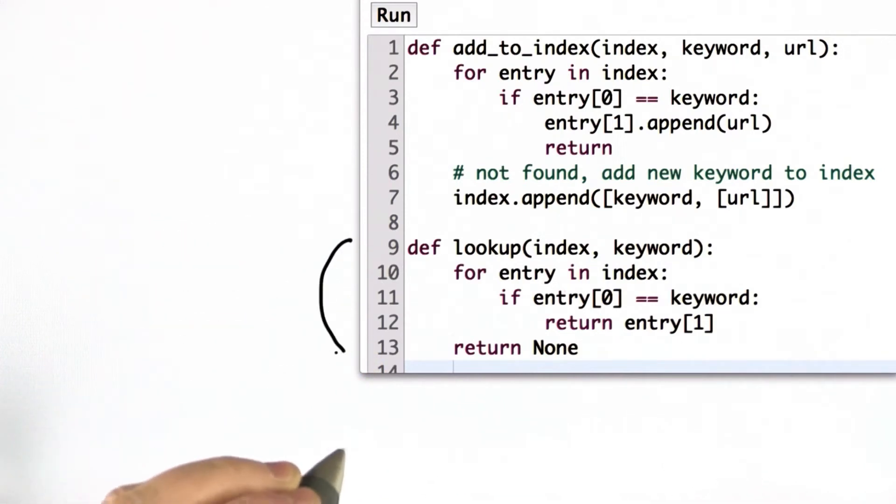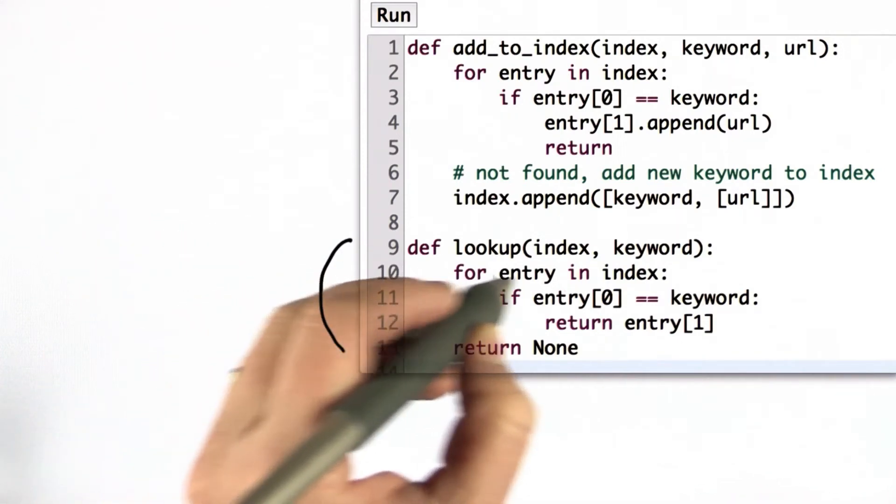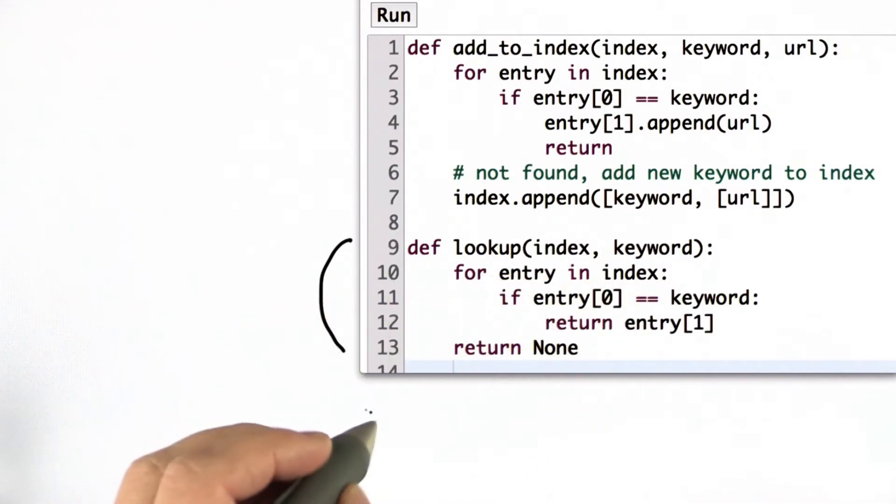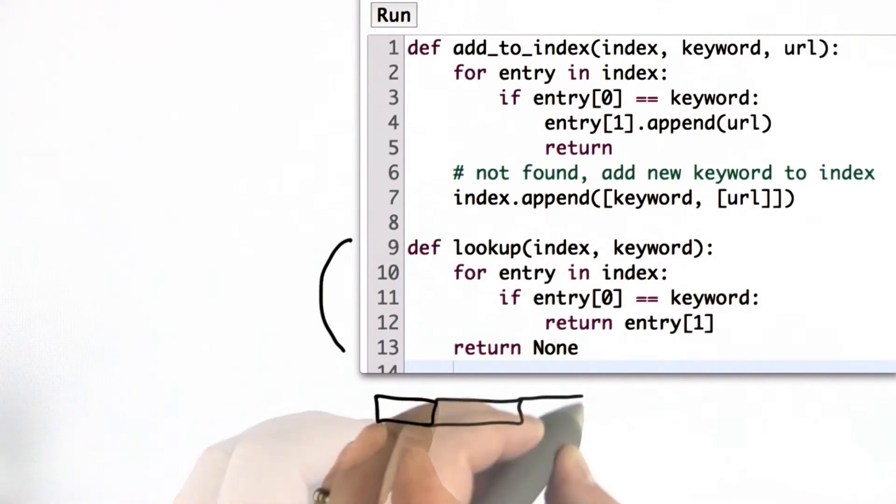And we have the code for lookup. So what lookup is doing, it's going through a loop for each of the entries in the index, and remember that the index is a list. So it's going through that list. For each element, it's checking does it match the keyword.